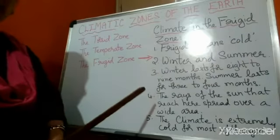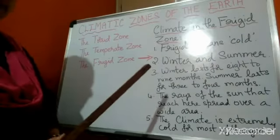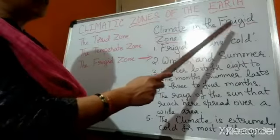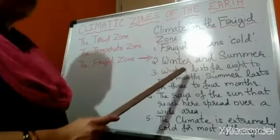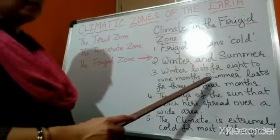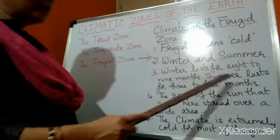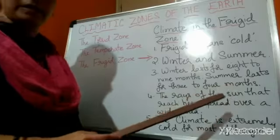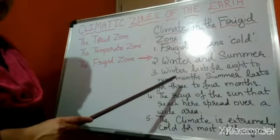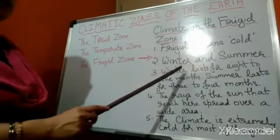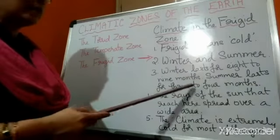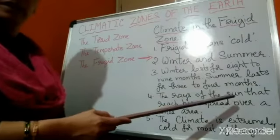We have winter and summer season in the frigid zone. Winter lasts for 8 to 9 months and summer lasts for 3 to 4 months.